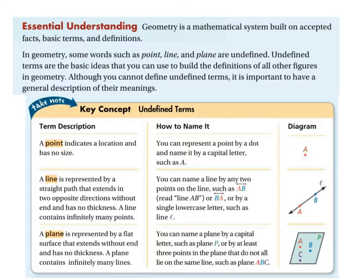A point is a location in space and it has no size. You could keep zooming in on a single point and what you're really doing is getting closer and closer to the very exact location — think of a molecule, and then even smaller. You can represent it by a dot and name it with a capital letter. The way we name it is important so we can interpret diagrams.